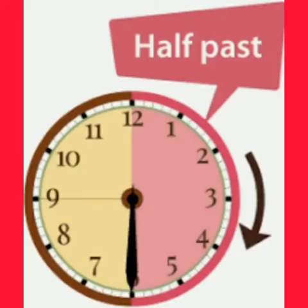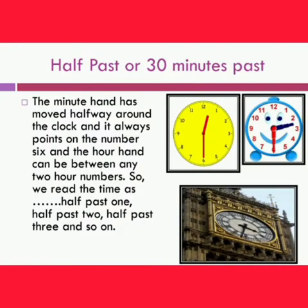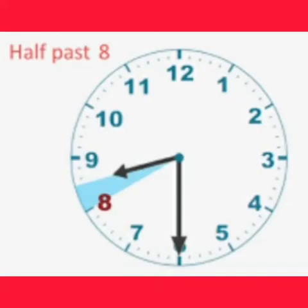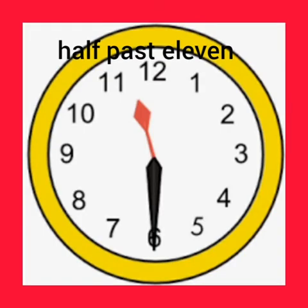Let's learn about half past. When we use the term half past, the minute hand has moved halfway around the clock and it always points to the number 6. The hour hand can be between any two hour numbers. So we read the time as half past 1, half past 2, half past 3, and so on. Here, the minute hand points to number 6 and the hour hand is between 5 and 6, so it is half past 5. This clock shows the time half past 8, and here it is half past 11.